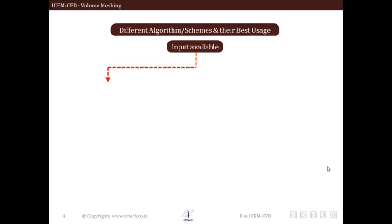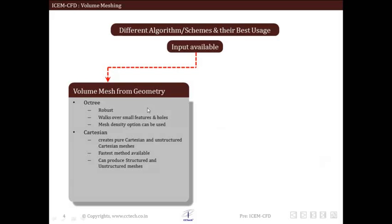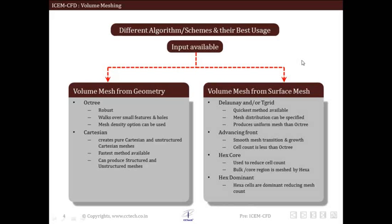Let us now see different types of schemes or algorithms within volume meshing. Depending upon what sort of CAD geometry we are considering, there are two types of algorithms. The first is volume mesh from geometry — creating volume mesh directly from the CAD model. Here we have the octree type of algorithm, which is pretty robust. It walks over small features and holes and creates a volume mesh directly from the CAD geometry, with various mesh density options available. Next is the Cartesian algorithm, which creates pure Cartesian and unstructured Cartesian meshes. It is a fast method and can produce both structured and unstructured meshes.